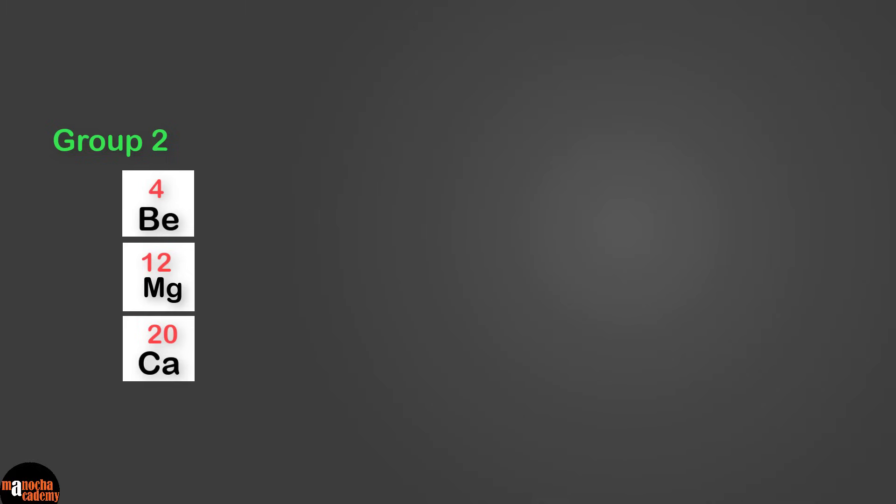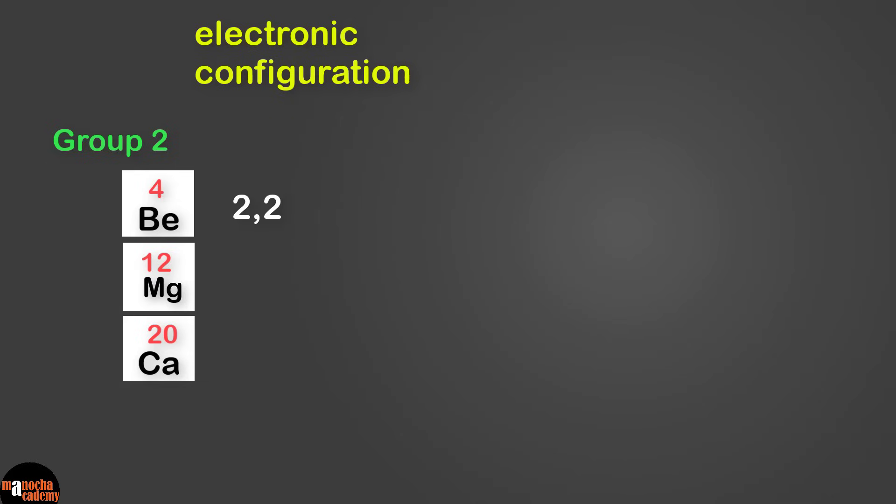Now let's look at group 2. Here we have beryllium, magnesium and calcium. Let's write down their electronic configurations. Beryllium with atomic number 4 is going to be 2, 2.